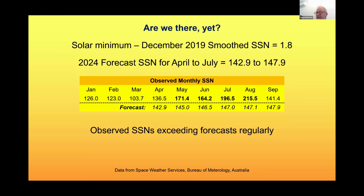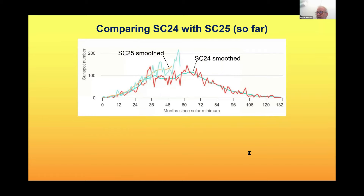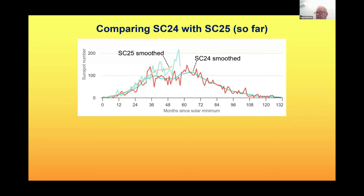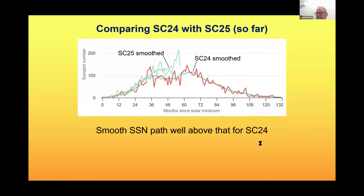We may be going through the solar peak right now, or it might yet be to come. Here's another graph showing a comparison between solar cycle 24 and the current cycle 25. The spiky chart is the monthly smooth sunspot number and the main line is smoothed over 13 months. We're climbing well above where we were in solar cycle 24. Note there are two humps — maybe we're in for a second hump, or maybe we're in the second hump. All good fun.